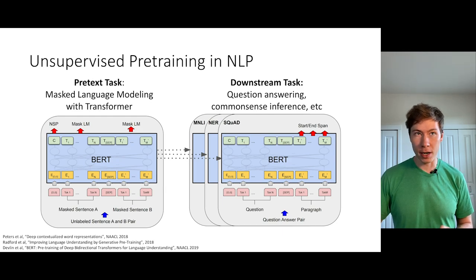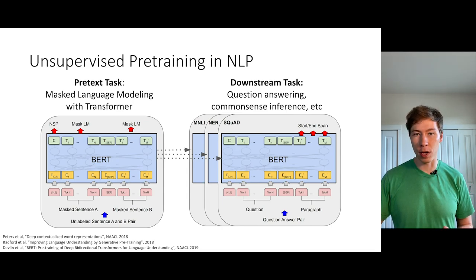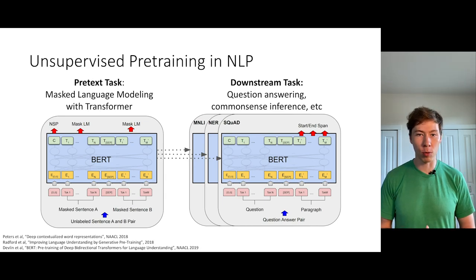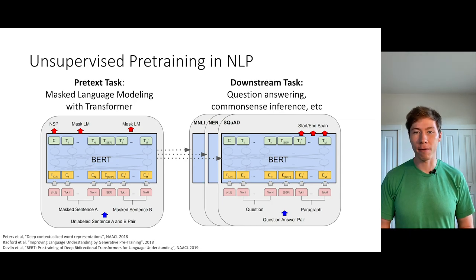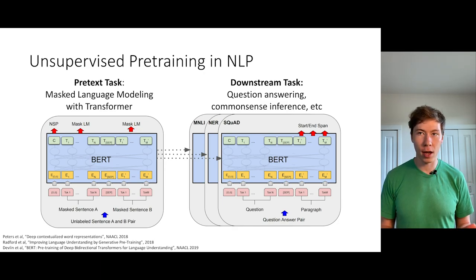The situation is somewhat different in natural language processing. Here, this idea of unsupervised pre-training has taken the field by storm over the past two years with the advent of the BERT model. They can take a lot of unsupervised text downloaded from the internet and perform masked language modeling as their pretext task. Then they fine-tune this large transformer model for downstream NLP tasks like question answering and common sense inference.